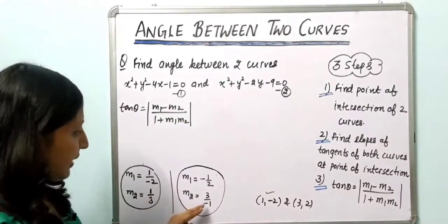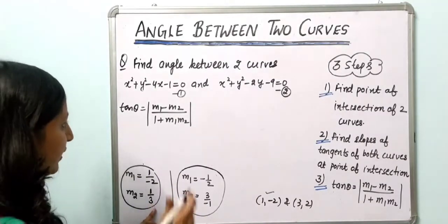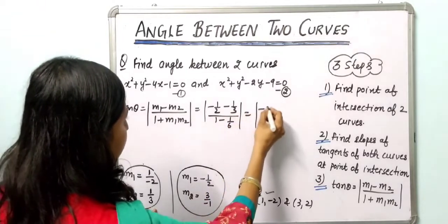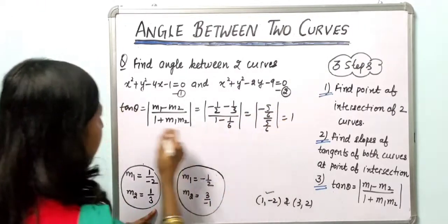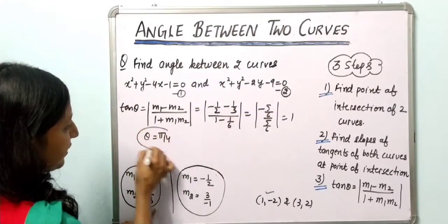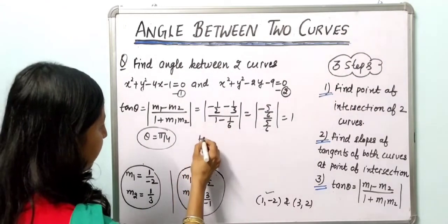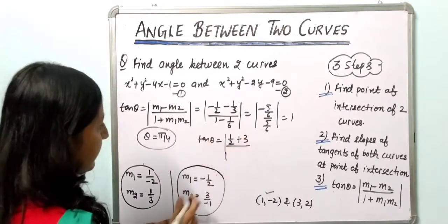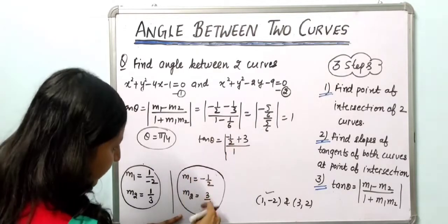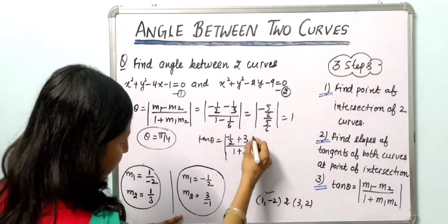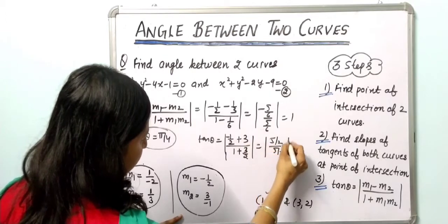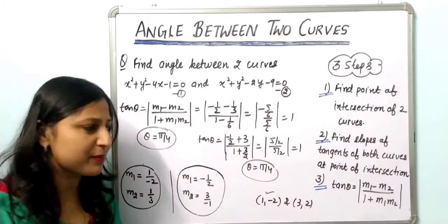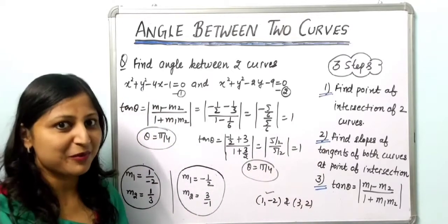Using the formula tan θ = |m1 − m2| / (1 + m1·m2) at the first point (1, −2): tan θ = |(−1/2) − (1/3)| / (1 + (−1/2)(1/3)) = |−5/6| / (5/6) = 1, so θ = 45°. At the second point (3, 2): tan θ = |(−1/2) − (−3)| / (1 + (−1/2)(−3)) = |5/2| / (5/2) = 1, so θ = 45° again. Therefore the angle between these two curves is 45°.